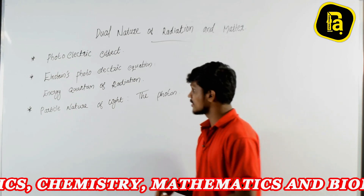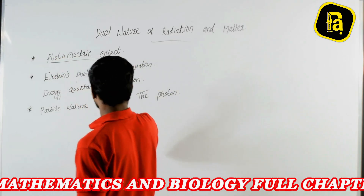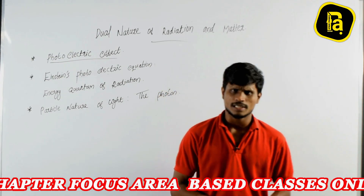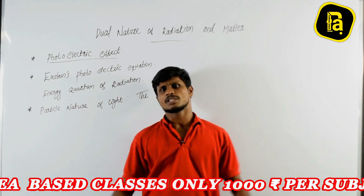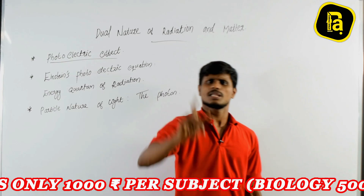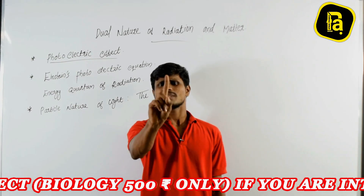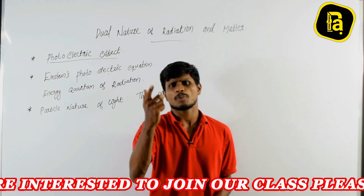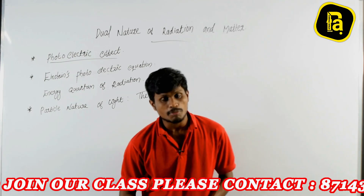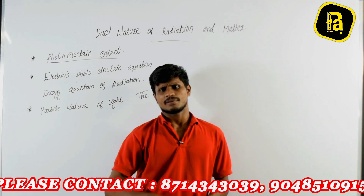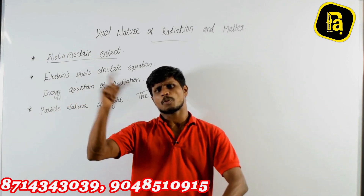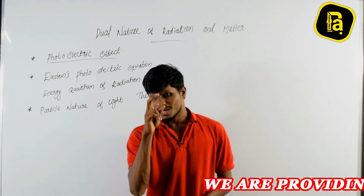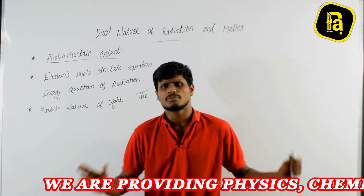Now let's talk about photoelectric effect. Electron emission — when electrons are emitted from a metal surface, it is called electron emission. There are three types of emission. One is thermionic emission — if we heat a metal surface, it is called thermionic emission. Second is field emission — if we apply an electric field, it is called field emission. Third is photoelectric emission.